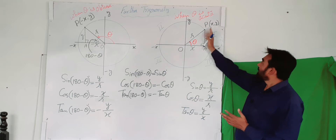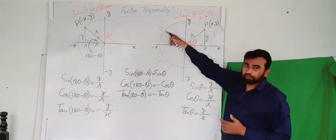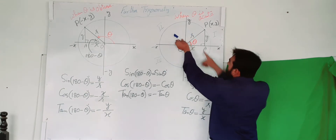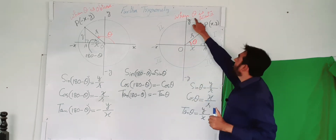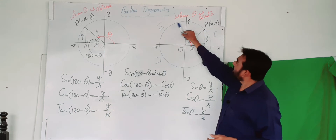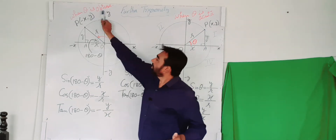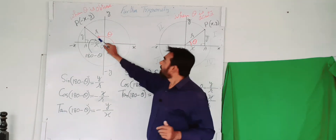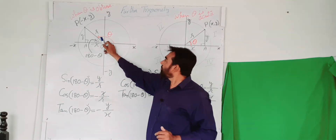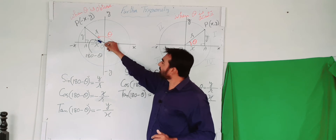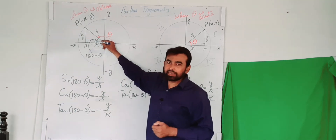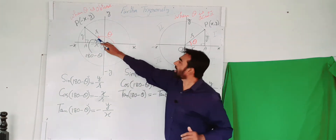Now let us consider another figure where point P has moved into the second quadrant. When point P was in the first quadrant, theta was acute — that is, less than 90 degrees. As this point moves into the second quadrant, theta becomes obtuse. Since the total angle on a straight line is 180 degrees, we subtract theta from 180, making this remaining angle 180 minus theta.